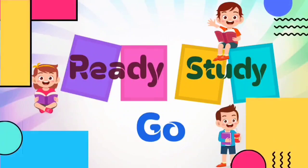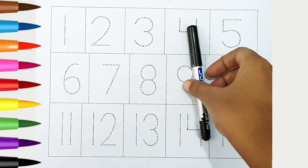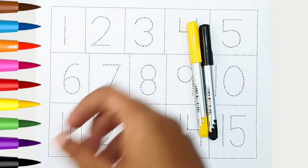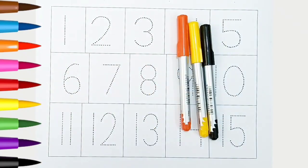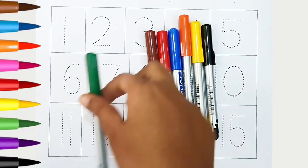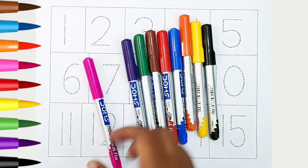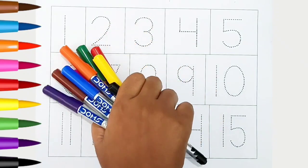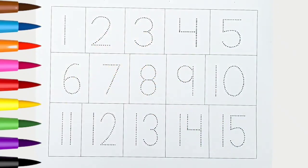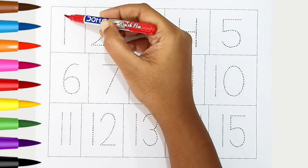Ready, study, go! Hi kids. Black color, yellow color, orange color, blue color, red color, brown color, green color, violet color, pink color. Hi kids, today we can learn the numbers from 1 to 15. Let's begin.